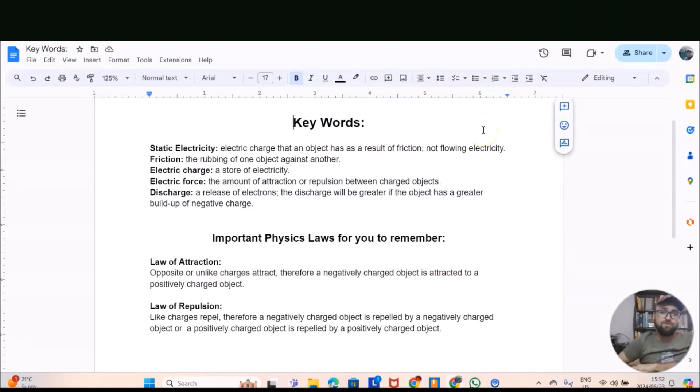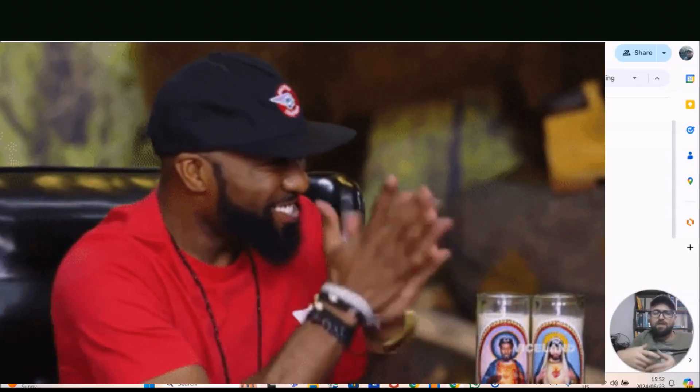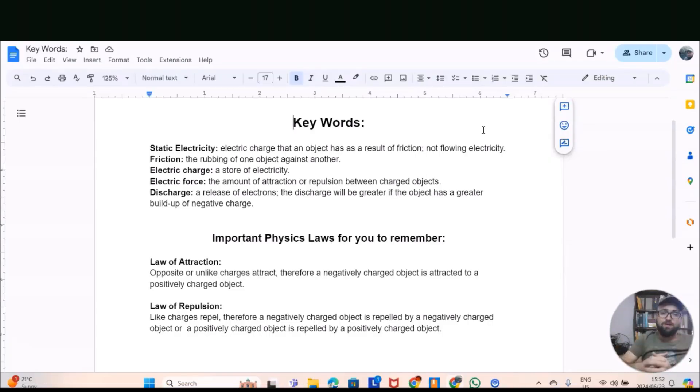First of all, there's only a couple of keywords that you have to understand properly before you can actually understand what static electricity is. The first word is static electricity - that is an electric charge that an object has as a result of friction, not flowing electricity. Now you're asking yourself, what is friction? Friction is the rubbing of one object against another object.